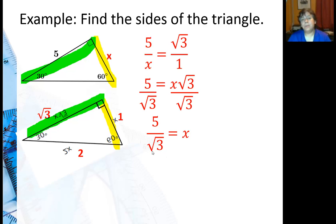Ideally we don't like the square root in the denominator, so I'm going to rationalize it by multiplying it by square root of 3 over square root of 3. The bottom becomes 3, and the top just becomes 5 square root of 3. And that's your final answer for that side.